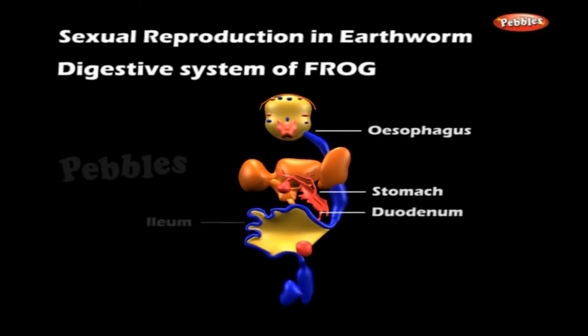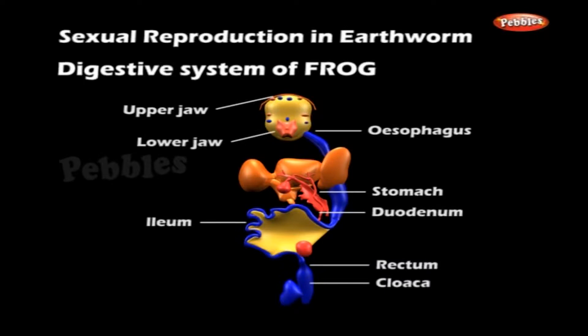The mouth leads into a wide buccal cavity bounded by upper and lower jaws. A set of vomerine teeth is present in the buccal cavity. A row of maxillary teeth are present in the upper jaw, and the lower jaw is devoid of teeth. The teeth prevent the prey from escaping, not for mastication. The tongue is sticky, protrusible, muscular and bifid at its tip, and is folded backwards when not in use.